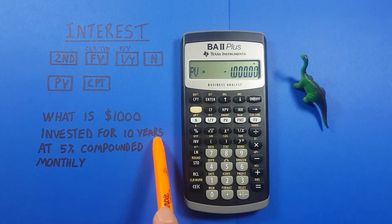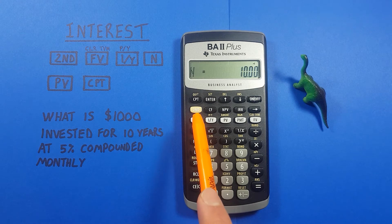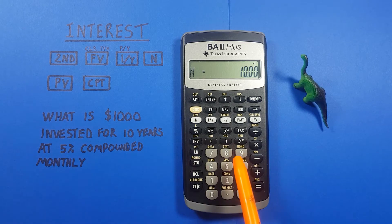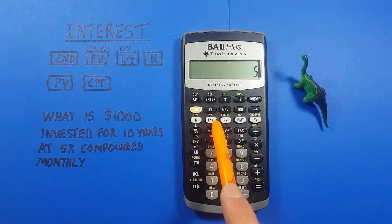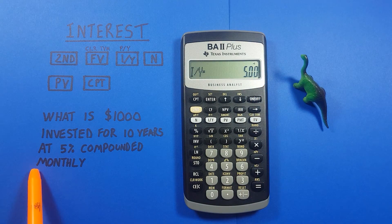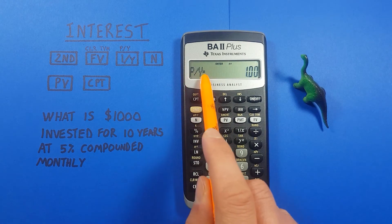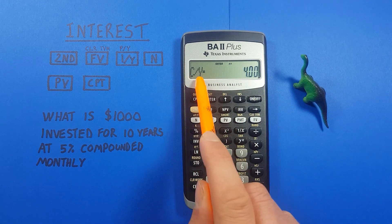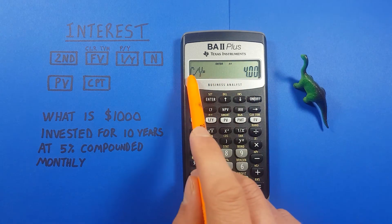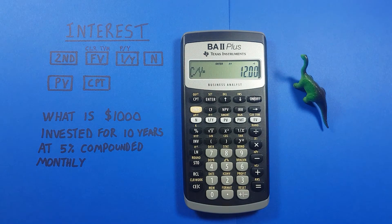Next, invested for 10 years — we hit 10 and press N. N is how many years. N equals 10. Then 5% is our interest rate, so we enter 5 and use the I/Y key. I/Y equals 5. Now for compounded monthly: we go Second then I/Y. First you'll see P/Y, but scroll down one and you get C/Y. Since it's monthly, we have 12 compounding periods, so we change C/Y to 12 and press Enter to confirm, then clear out.